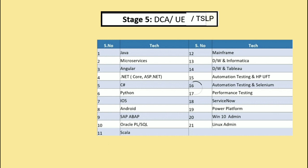Stage 5 consists of TSLP, DCA, or UE. In TSLP, you can choose any one track from T1 to T9 and attend the assessment — 30 MCQs and one hands-on. In DCA, there are 21 categories including Java, C#, Python, Microservices, and more. You choose any one and you will have 30 MCQs and two coding questions related to the language chosen.